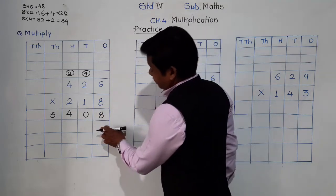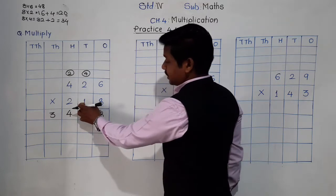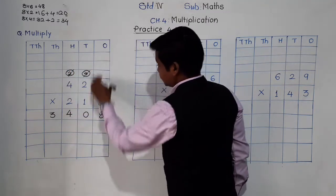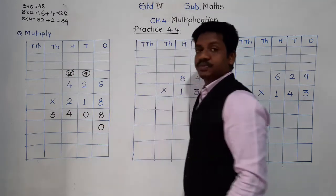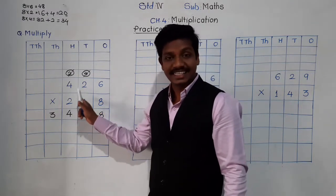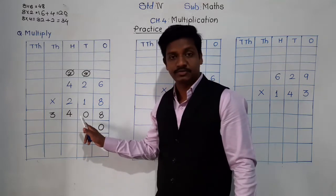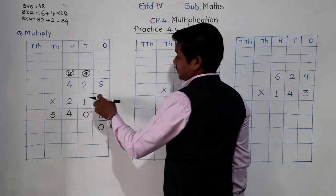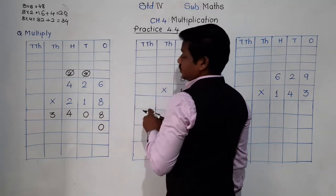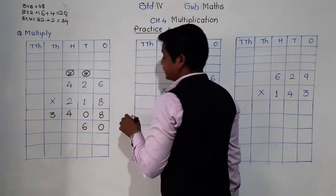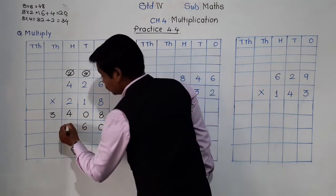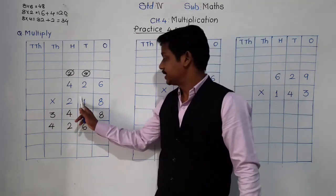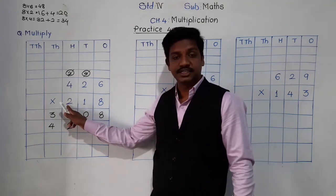Now in the next step we are going to multiply by the tens place digit, which is 1. Before that, cut this carry and in the ones place put 0, because we are going to multiply by the tens place digit, so its answer will also start from the tens place. 1 sixes are 6, 1 twos are 2, 1 fours are 4.